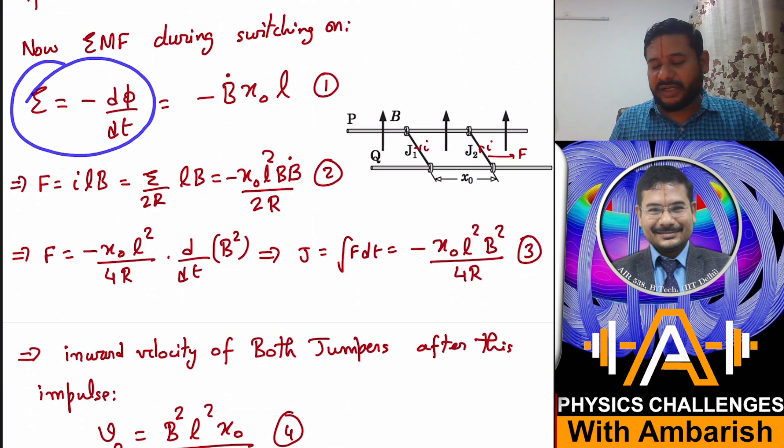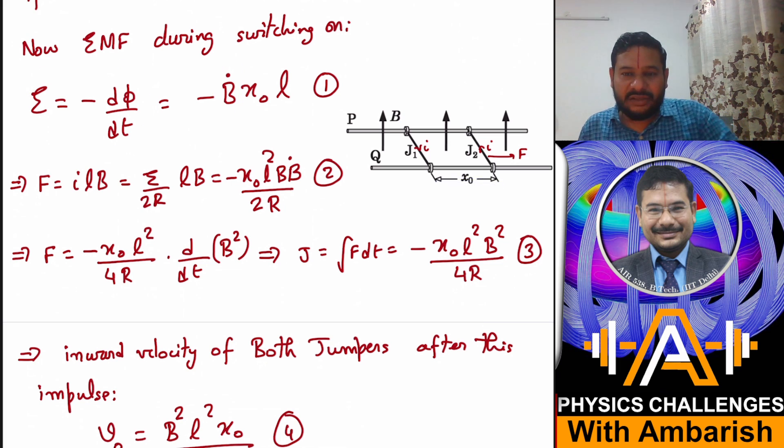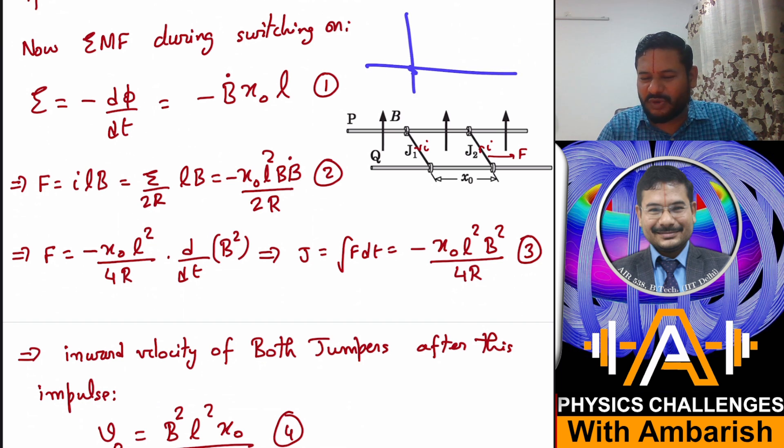Now let's talk about EMF during the switching on process. EMF is dφ/dt. Initial separation is x₀ and let's say rate of change of magnetic field is Ḃ. Although magnetic field is switched on suddenly, we can assume that this very small interval dt in which there is some kind of increase in magnetic field.